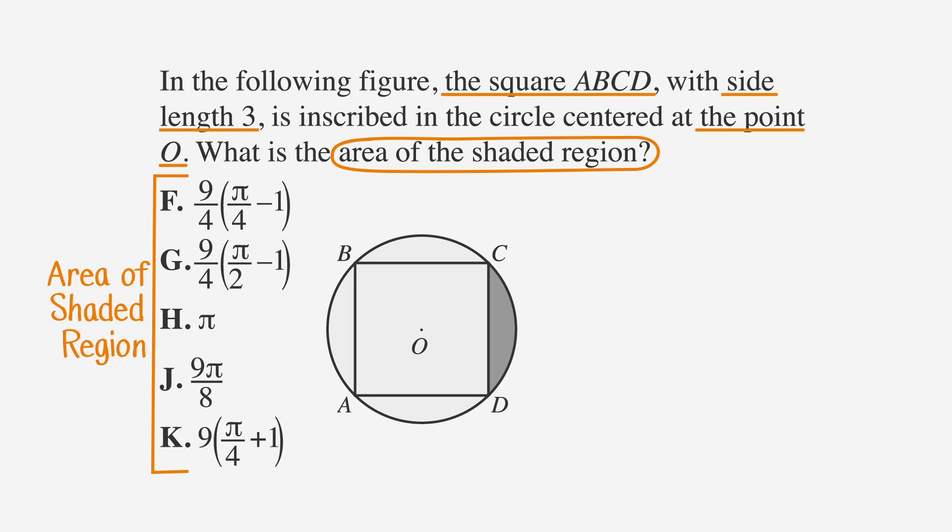We know that the area of the shaded area is the area of the circle minus the area of the square. But we don't actually need to find the area of the whole circle. We only need 1 fourth of that. So the equation is 1 fourth times the quantity of the area of the circle minus the area of the square.